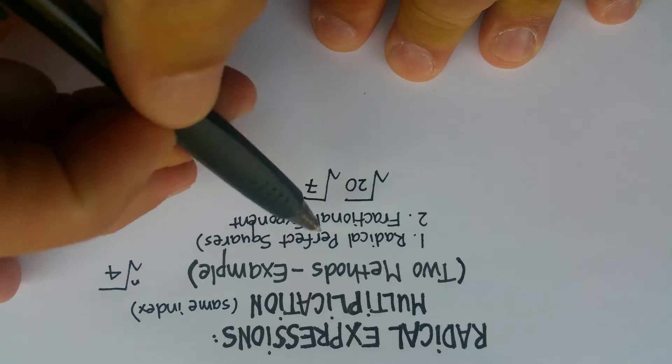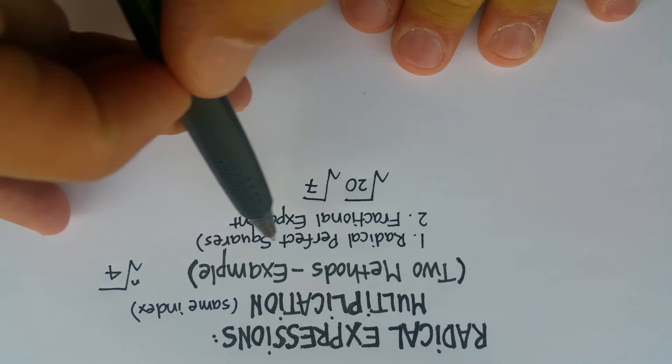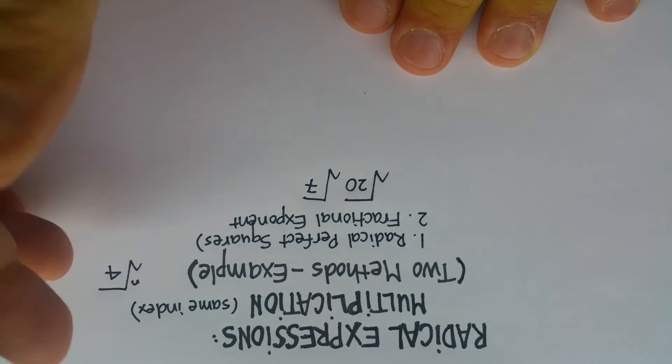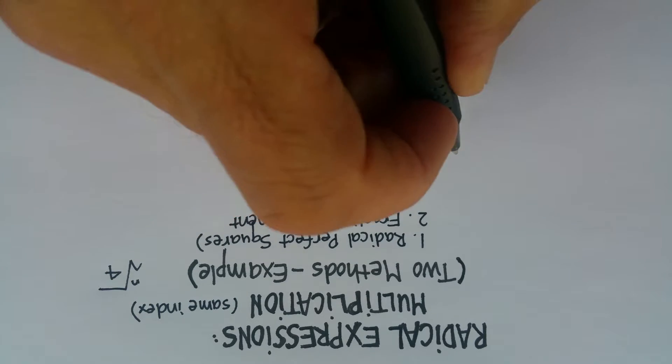Now, it's a little complicated because there are two different ways to do this. So I'm going to do this radical perfect square method first. And let me show you how it works.